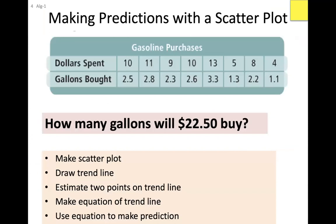To wrap up: once you have the scatter plot, draw a trend line, pick two points on your trend line, calculate the slope and y-intercept, write the equation. Then use that equation to answer questions. For the gasoline example: if x is dollars spent and y is gallons bought, and the question asks how many gallons would $2.50 buy, toss x = 2.5 into your equation and it tells you the gallons bought. That's the whole lesson. Have a wonderful weekend and I'll see you Tuesday.